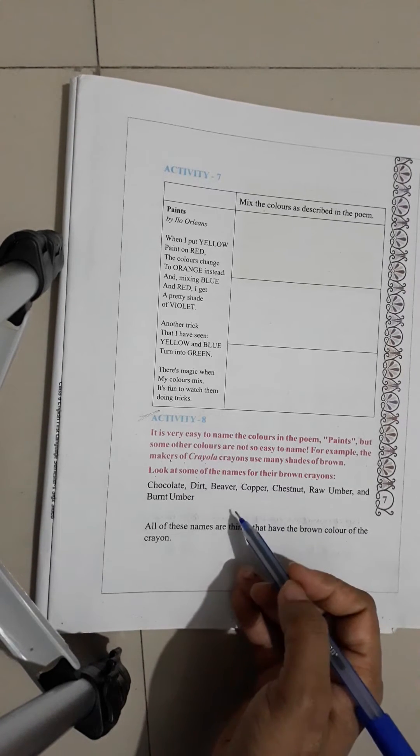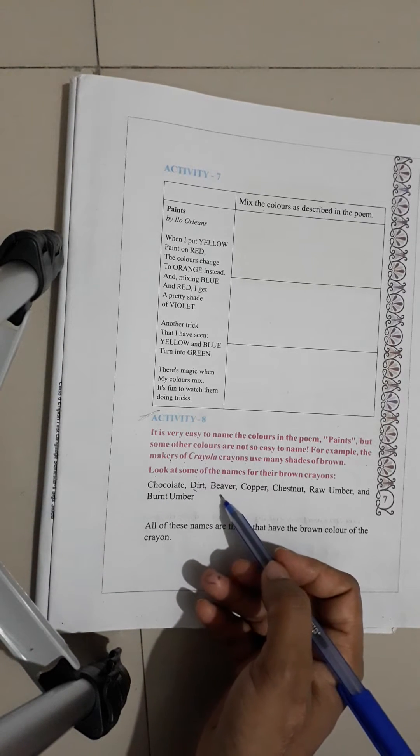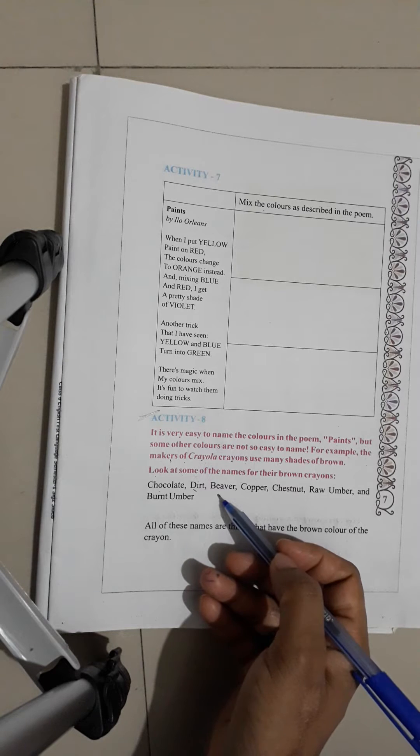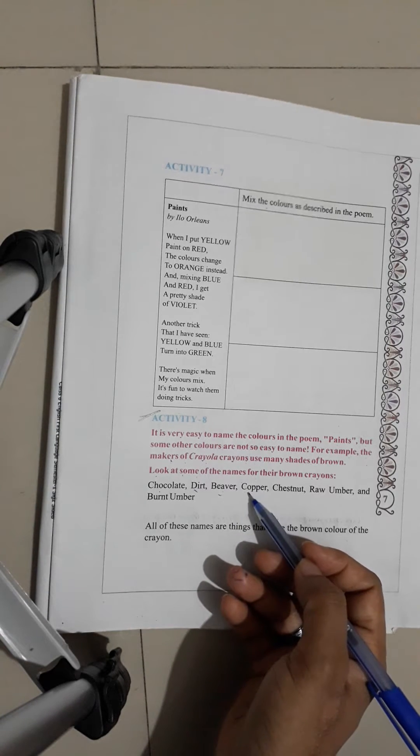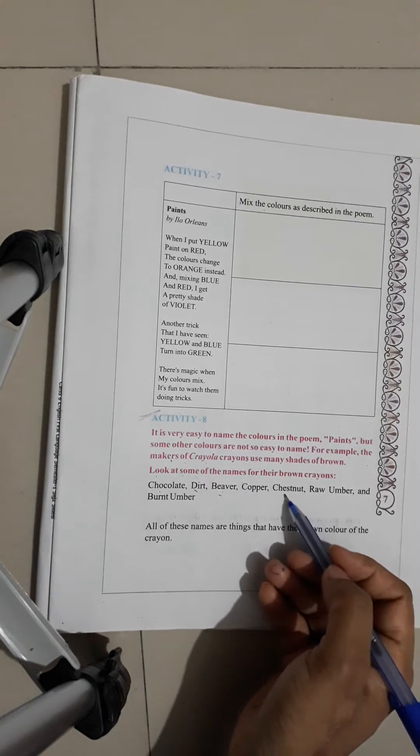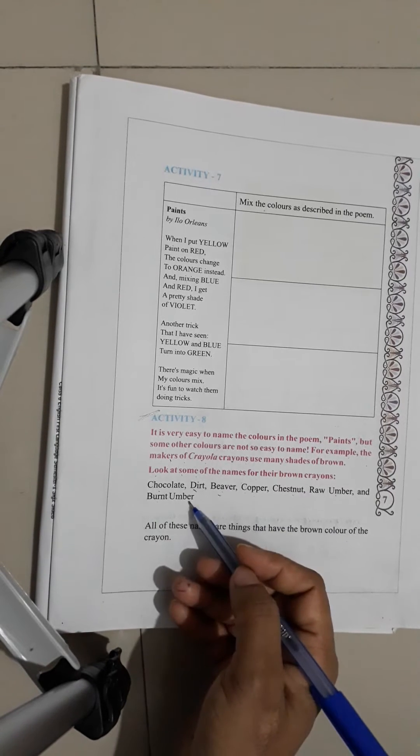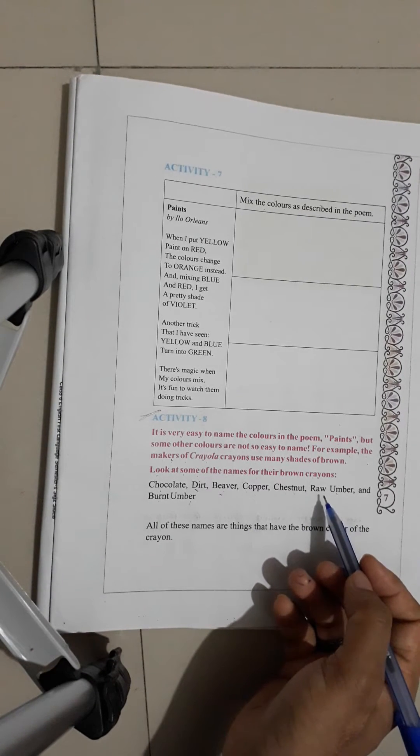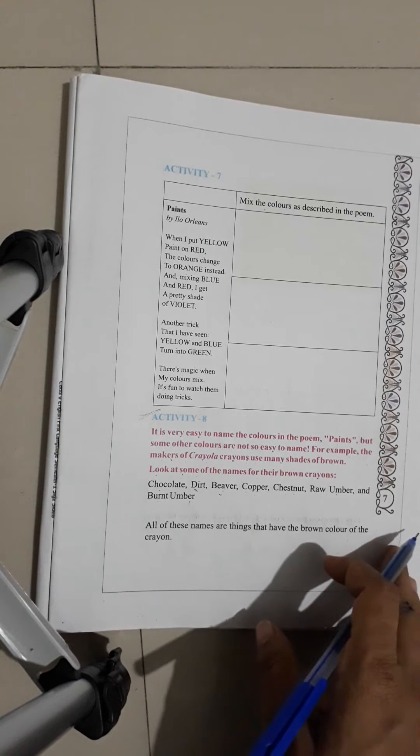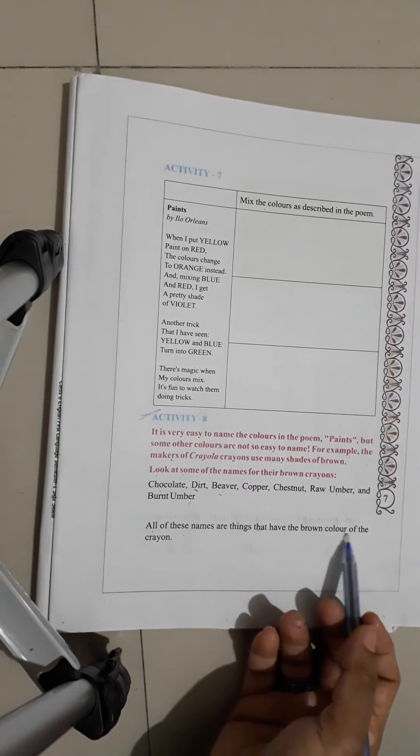Now, we are made from brown color. The color of chocolate. Chocolate. Brown color is also made. Dirt. It is also made from brown color. Beaver, an animal, made from skin. Copper. Raw umber and burnt umber. These are things that have the brown color of the crayons. These are the new things that all the colors will be brown.